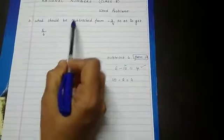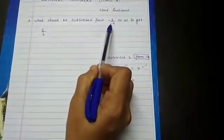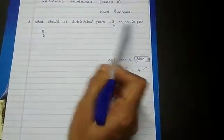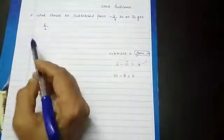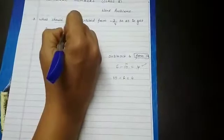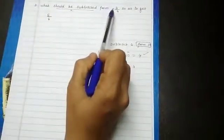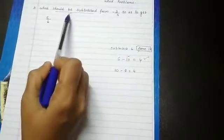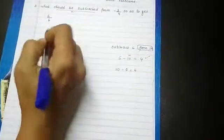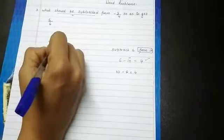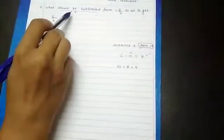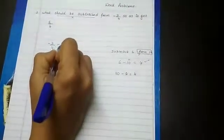What should be subtracted from minus 3 by 4 so as to get 5 by 6? So let us assume that x should be subtracted from minus 3 by 4. That means from minus 3 by 4, x has to be subtracted.